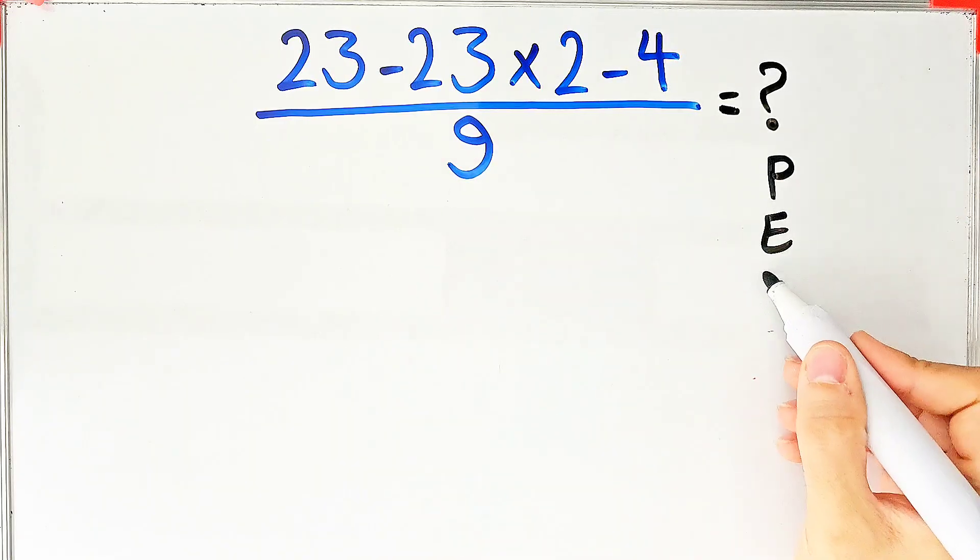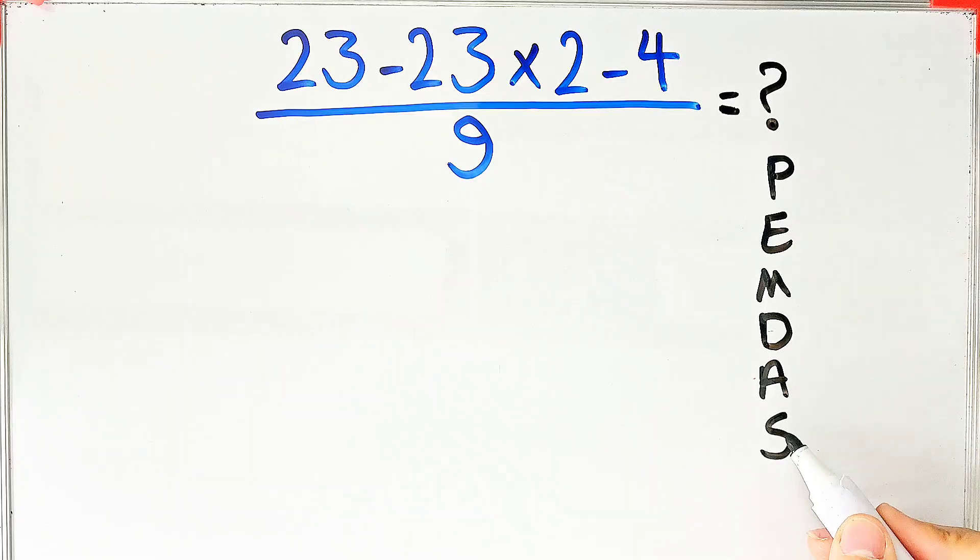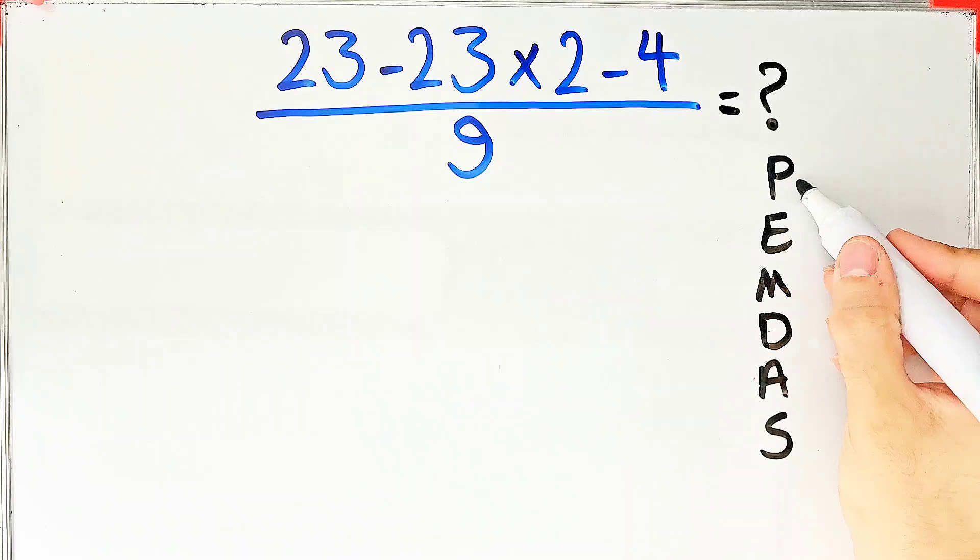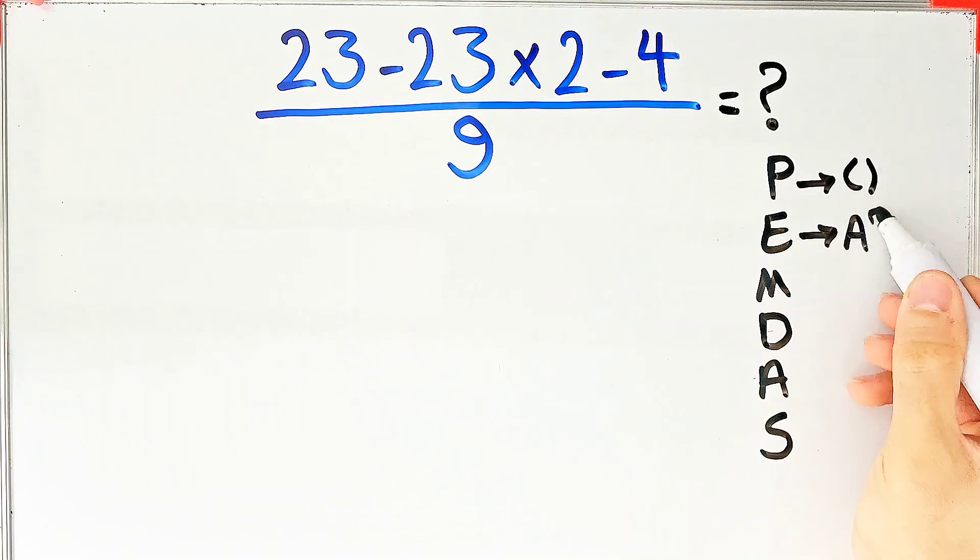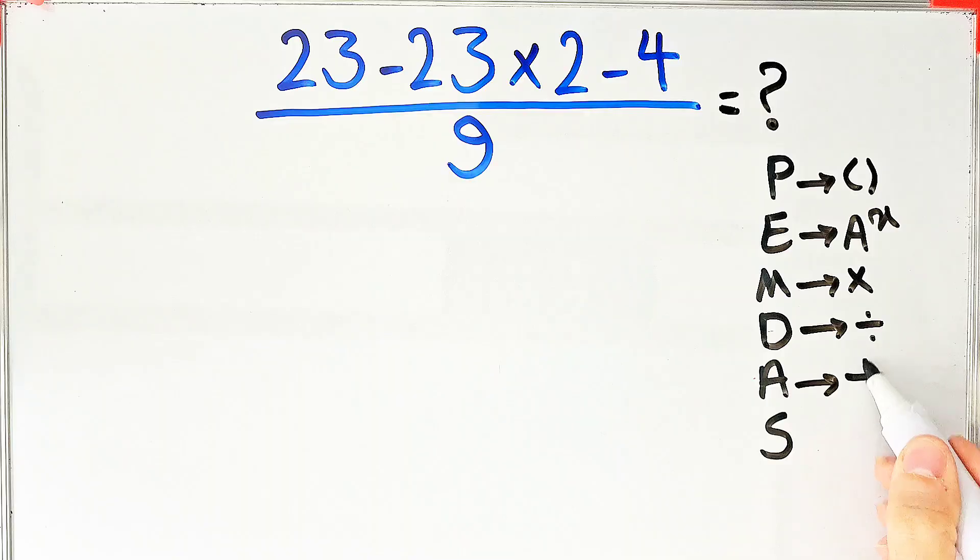PEMDAS shows the priority of the mathematical operations, and if you don't pay attention to this rule you get the wrong answer. In this rule, P stands for parentheses, E stands for exponent, M stands for multiplication, D stands for division, A stands for addition, and S stands for subtraction.